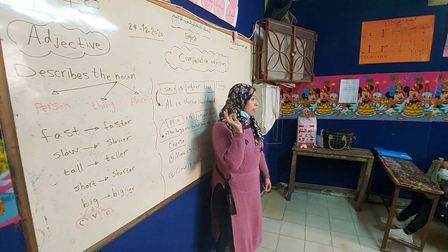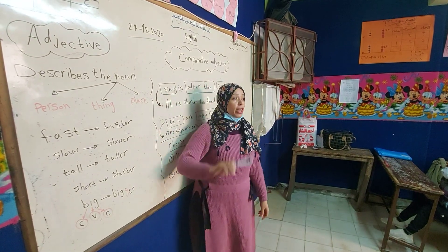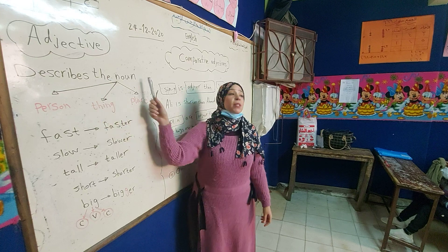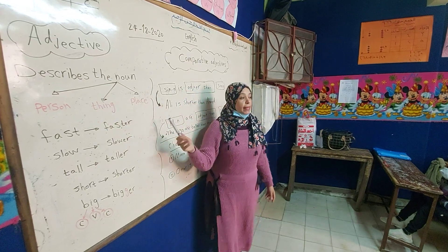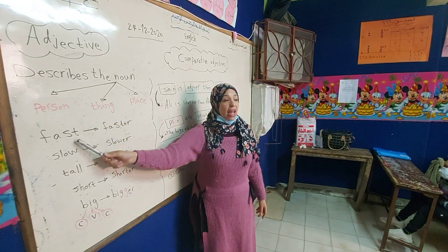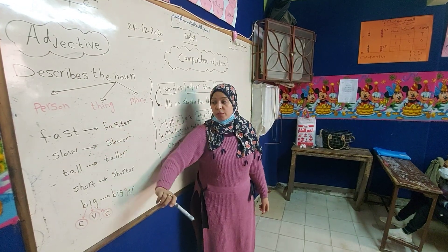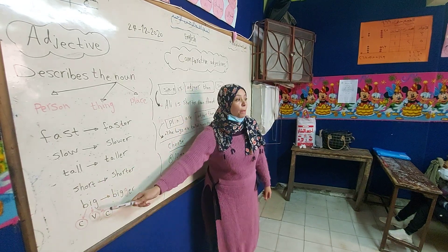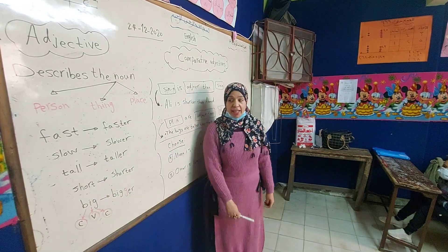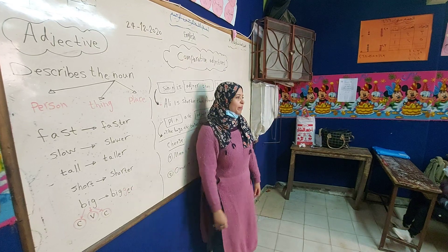The adjective is the word that describes the noun. For example: fast, slow, tall, short, big. Let's practice then.